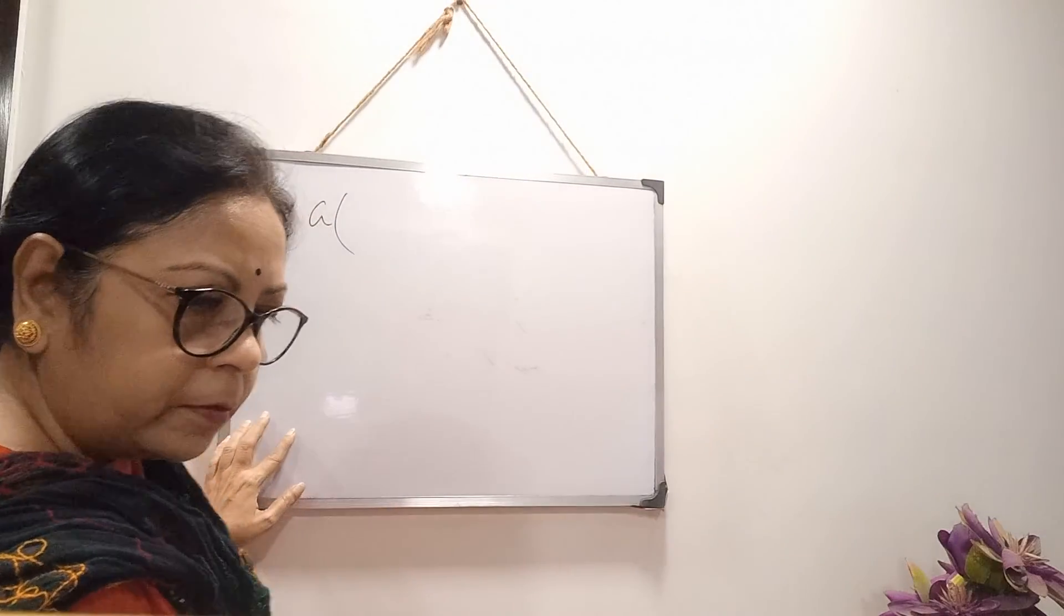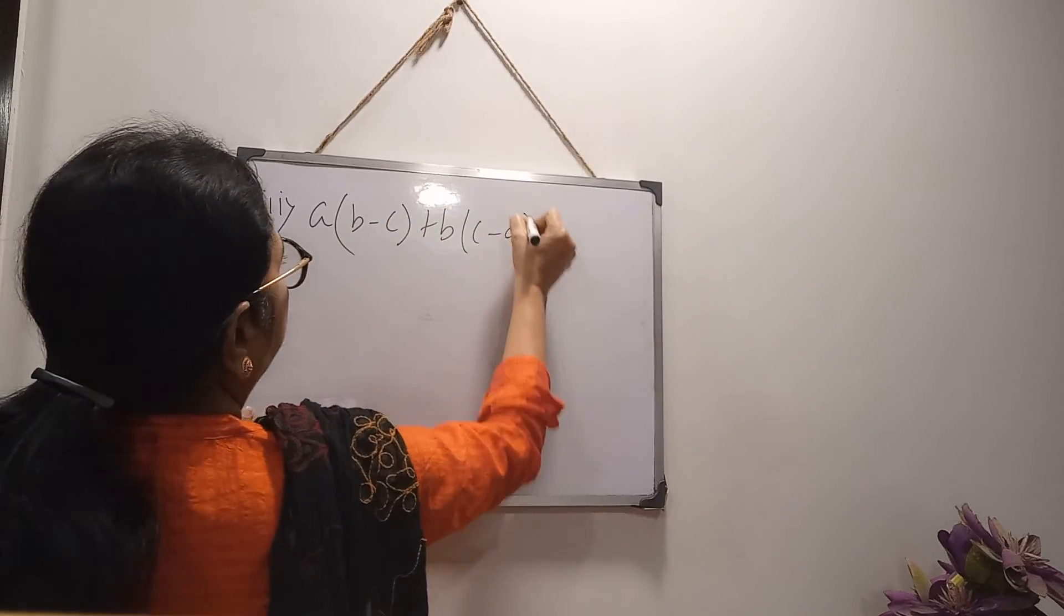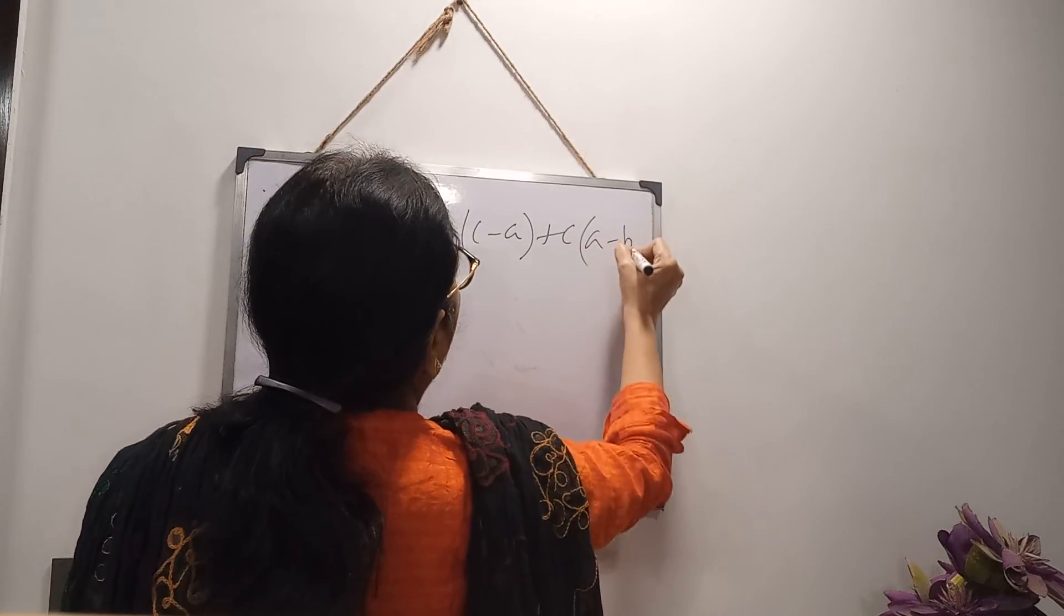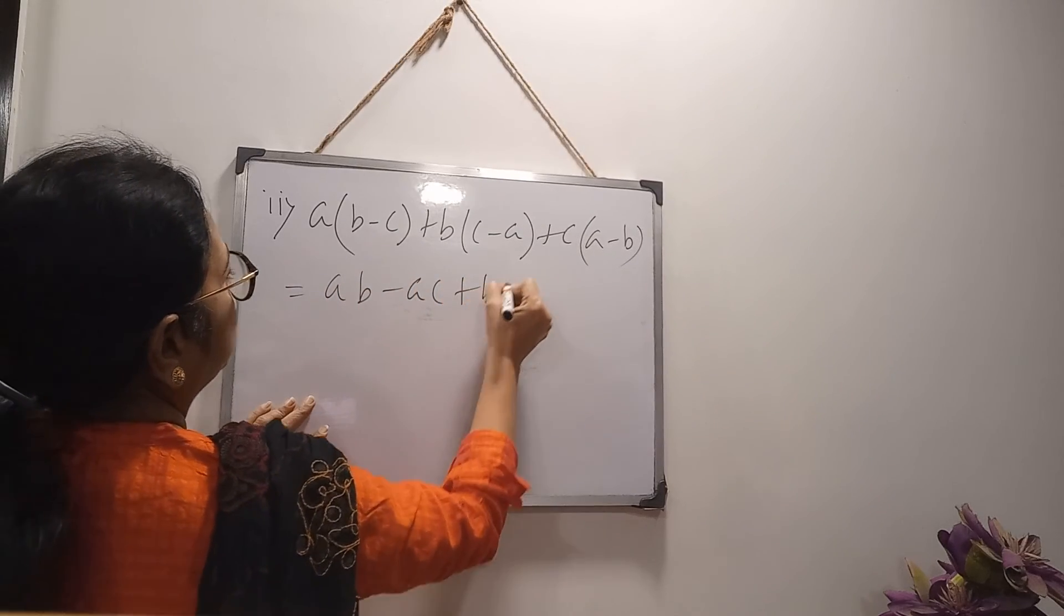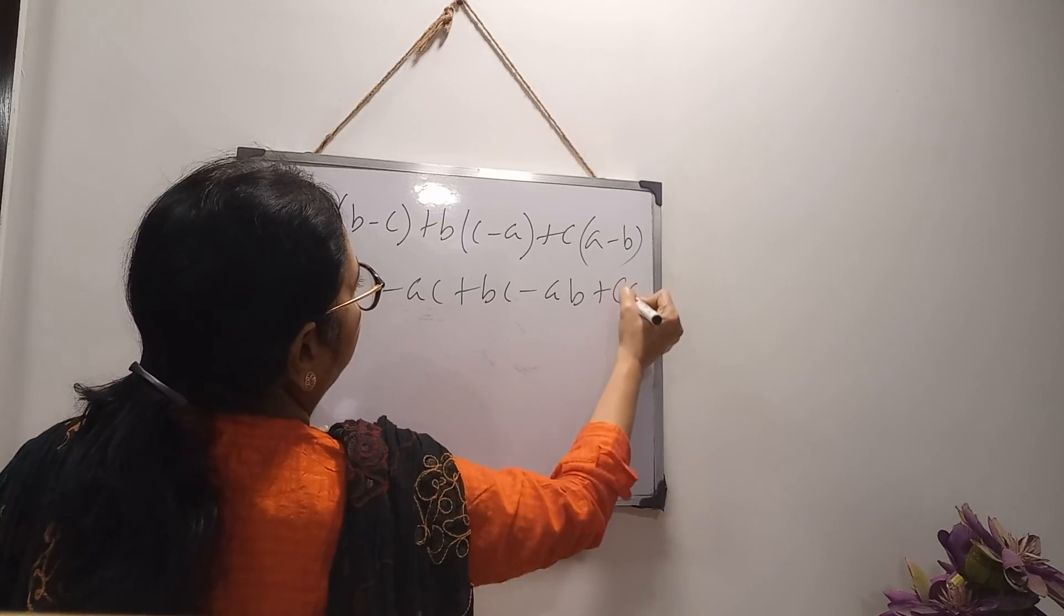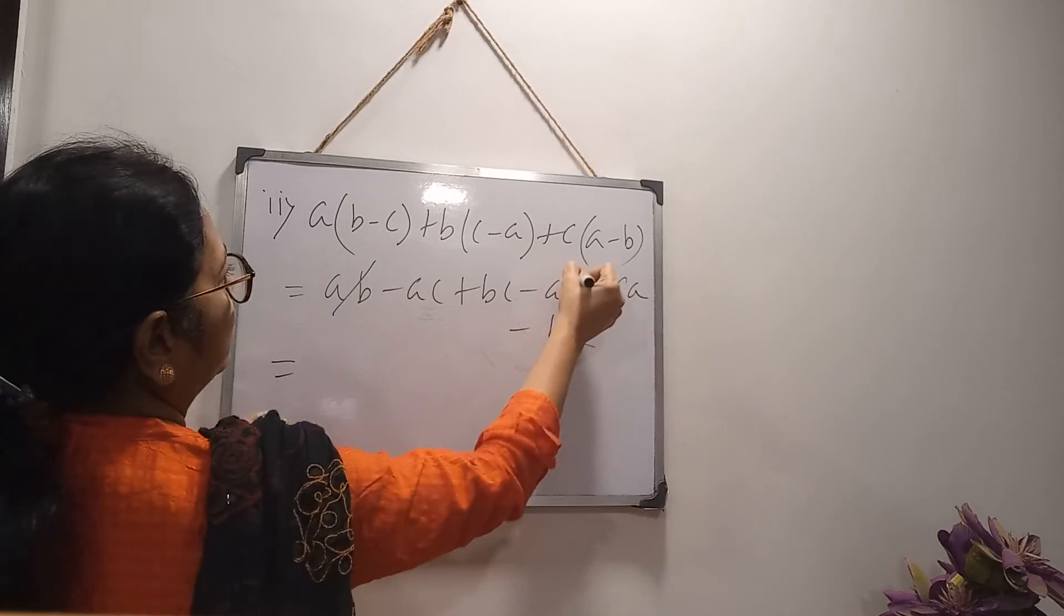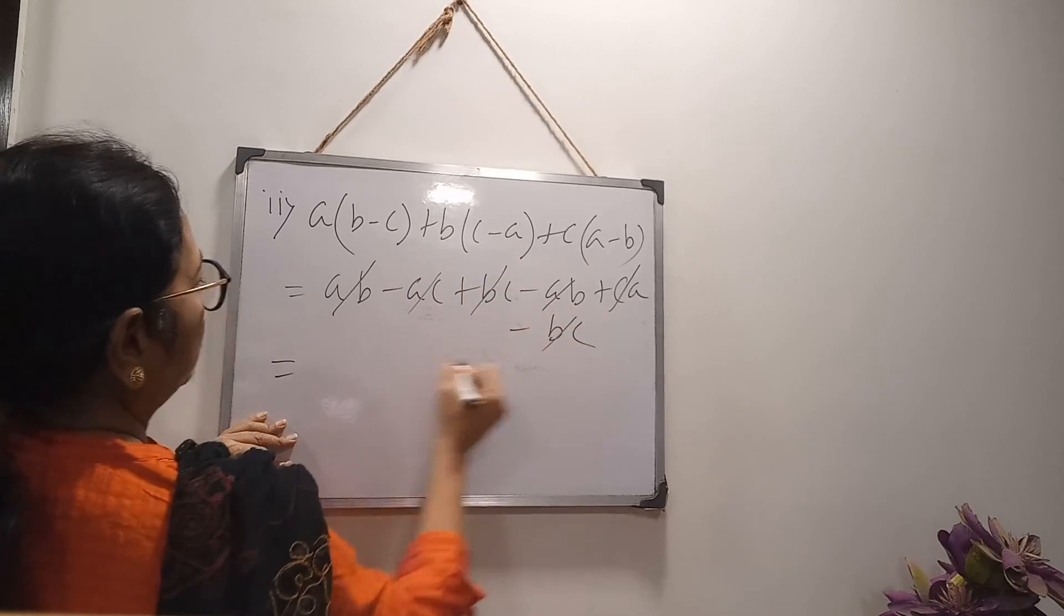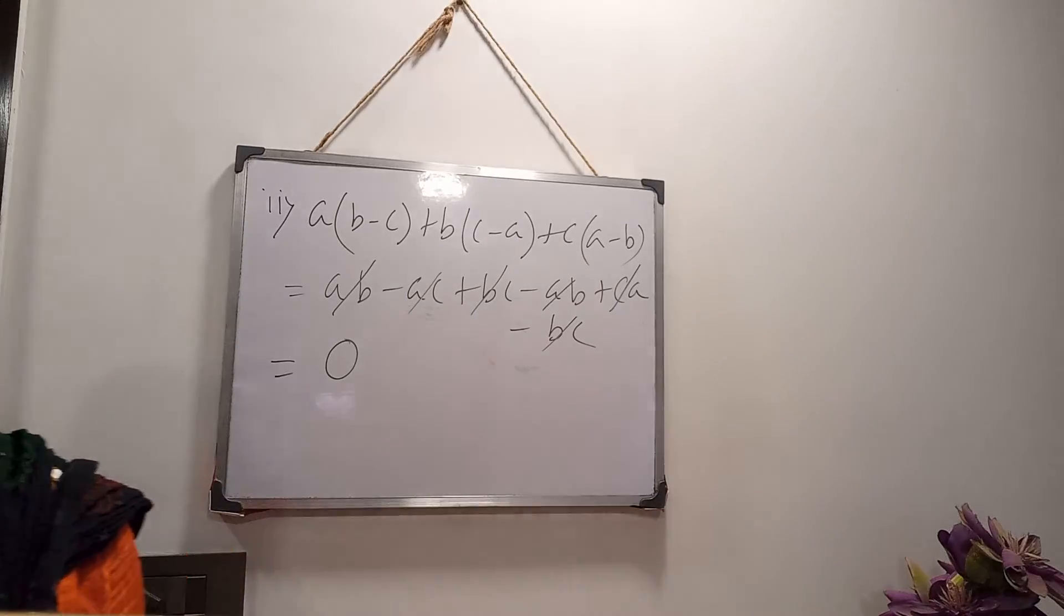A times B minus C, plus B times C minus A, plus C times A minus B. Again by multiplication, open the bracket. AB minus AC plus BC minus AB plus CA or AC minus BC. Now AB and AB cancel. Minus AB plus AB cancel. Minus AC plus AC cancel out. Plus BC minus BC. So here answer is 0. Now next one you will get in next video. Thank you.